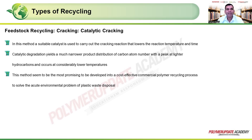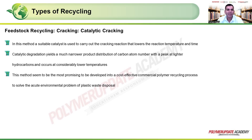In catalytic cracking, a suitable catalyst is used to carry out the cracking reaction, lowering the reaction temperature and time. The catalyst accelerates or catalyzes the process. Catalytic degradation yields a narrower product distribution — carbon numbers are closer together — with a peak of lighter hydrocarbons, occurring at considerably lower temperatures. This method is considered the most promising for a cost-effective commercial polymer recycling process, although catalyst costs and reactor requirements must be factored into the economy of scale.